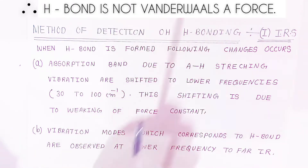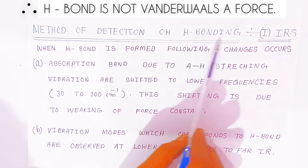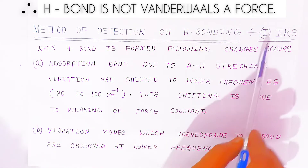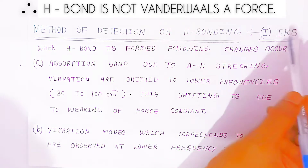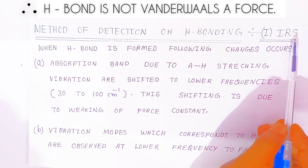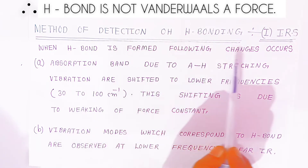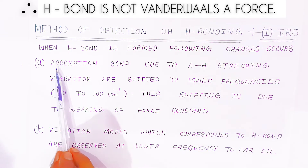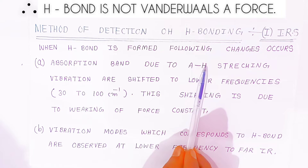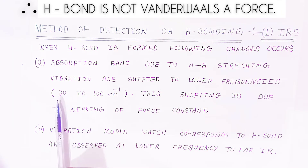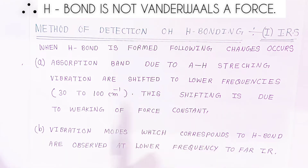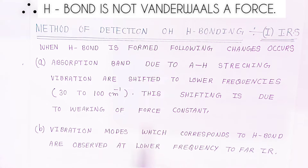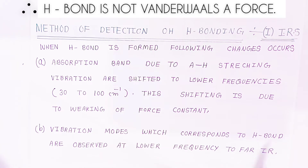Hydrogen bonding is not a van der Waals force. Now we are going to see methods of detection of hydrogen bonding. The first method is infrared spectroscopy (IR spectroscopy). When hydrogen bonding is formed, the following changes occur in IR spectra: the absorption band due to A-H stretching vibration is shifted to lower frequency by 30 to 100 cm⁻¹. This shifting is due to weakening of the force constant. Vibration modes corresponding to hydrogen bonds are observed at lower frequency in far infrared.